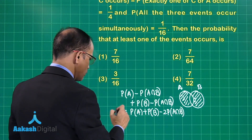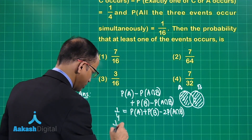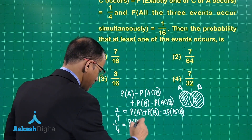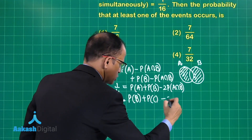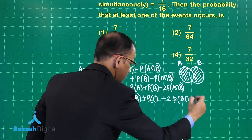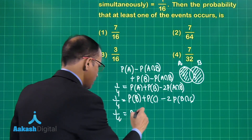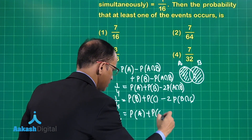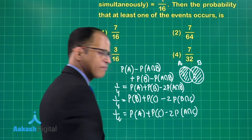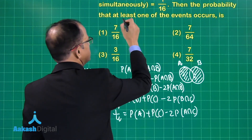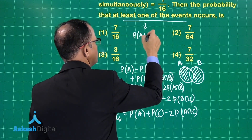Similarly for B and C: P(B) + P(C) − 2·P(B∩C) = 1/4, and for C and A: P(A) + P(C) − 2·P(A∩C) = 1/4. We need to find P(A∪B∪C), which equals P(A) + P(B) + P(C) − P(A∩B) − P(B∩C) − P(A∩C) + P(A∩B∩C).